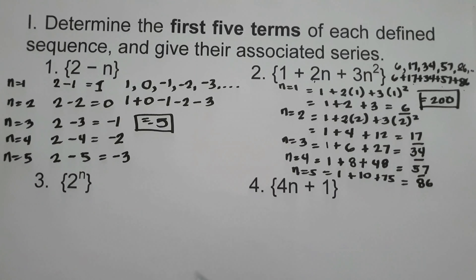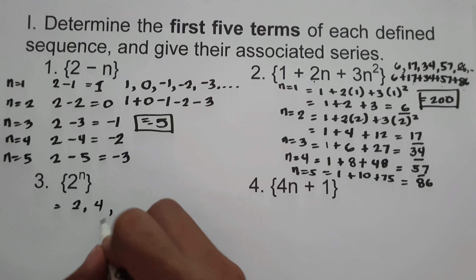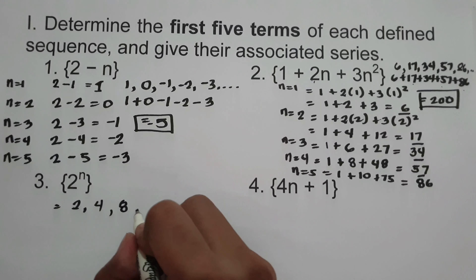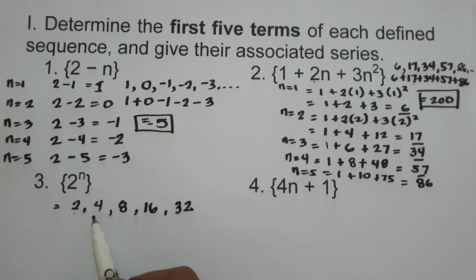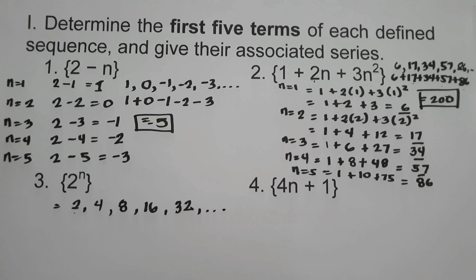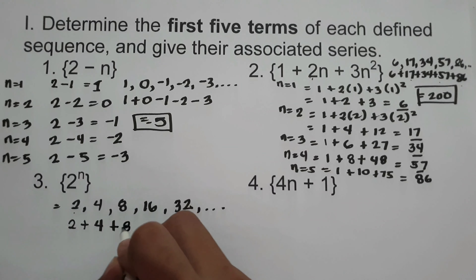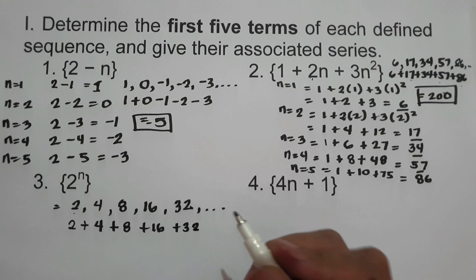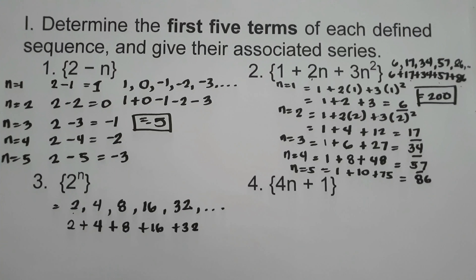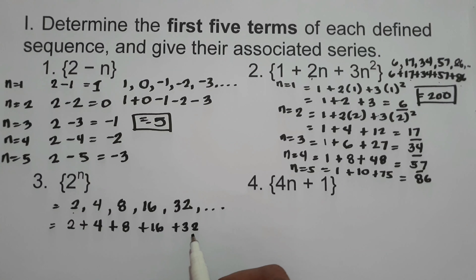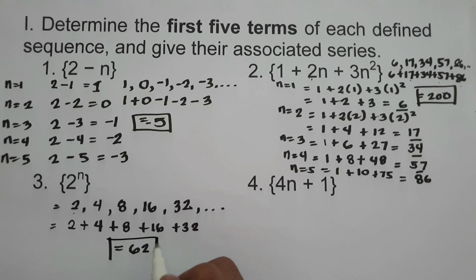Example 3: 2 raised to n. For n = 1: 2¹ = 2. For n = 2: 2² = 4. For n = 3: 2³ = 8. For n = 4: 2⁴ = 16. For n = 5: 2⁵ = 32. So the sequence is 2, 4, 8, 16, 32. The associated series is 2 + 4 + 8 + 16 + 32 = 62.